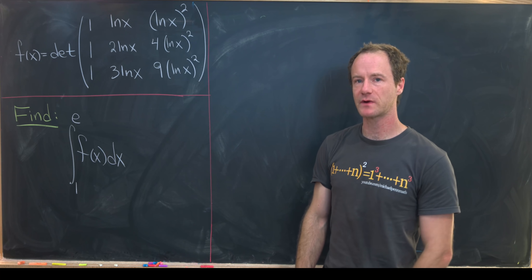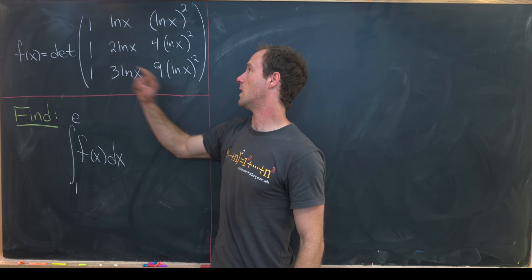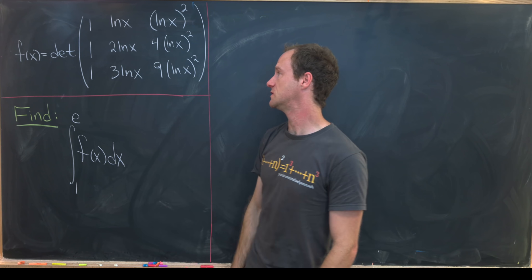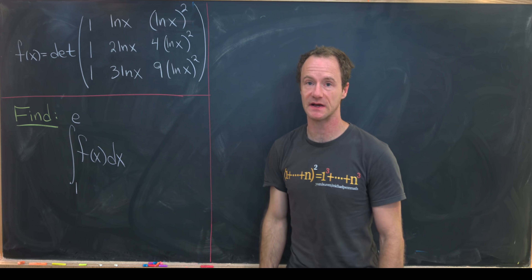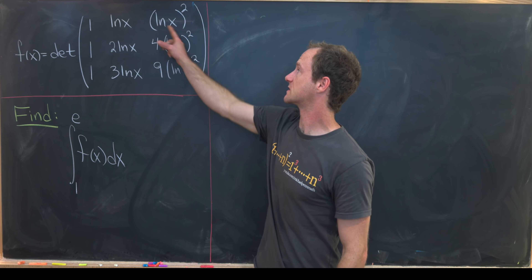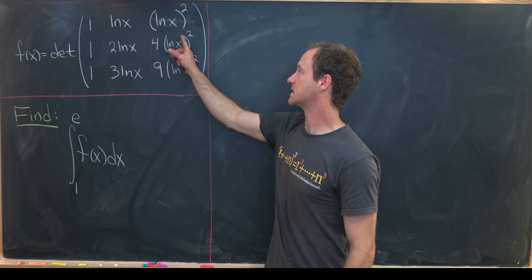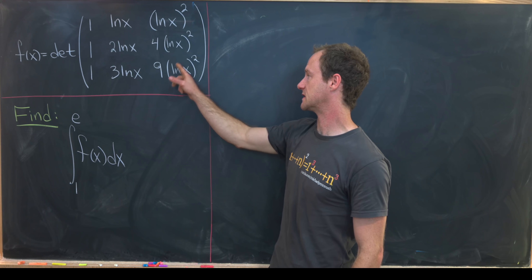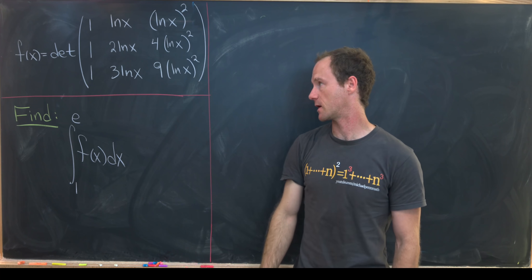Reading the matrix column-wise: the entries are 1, 1, 1; then ln(x), 2·ln(x), 3·ln(x); then (ln x)², 4(ln x)², and 9(ln x)².